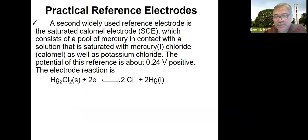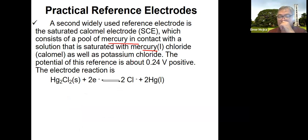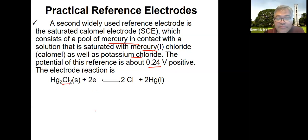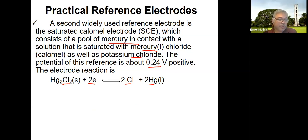The saturated calomel electrode (SCE) consists of mercury in contact with a solution saturated with mercury chloride (calomel) as well as potassium chloride. Its potential is around 0.24 V — slightly higher than the silver-silver chloride electrode at 0.2 V. Both are positive with respect to SHE. The electrode reaction is mercury chloride being reduced to give chloride ion and mercury. It is the second most widely used reference electrode.